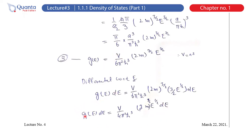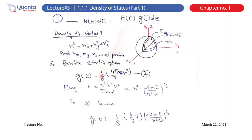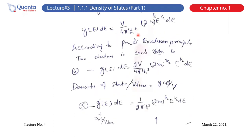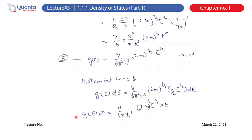So the density of states G(E) that we have derived is this expression. We need this function to calculate the number of electrons, which is why we calculated G(E). Now we look at F(E), the probability distribution. Since we are talking about electrons, we have to apply the Fermi-Dirac distribution, so F(E) will be the Fermi-Dirac distribution.